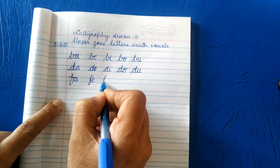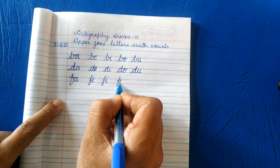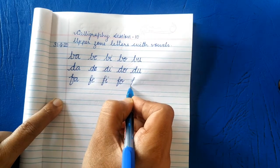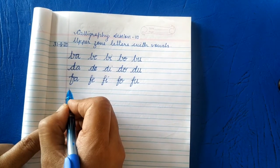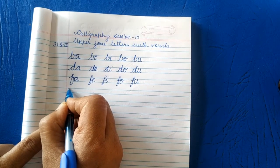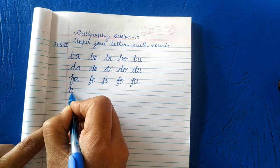Next letter is H. Make a loop, make a loop H, connect with A, HA, HE, HI, HO and HU.